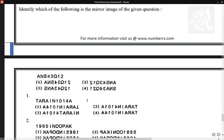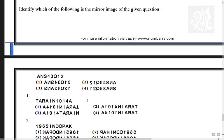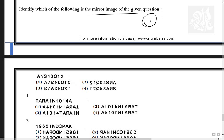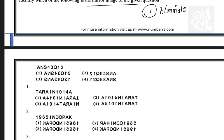Image questions — identify the mirror image of the given question. Visual reasoning: keep in mind, there are certain things you need to know. I believe in one rule of visual reasoning: we always eliminate, we do not find the answer. We eliminate what is not the answer, because in visual reasoning it's the only section where you will not have 'none of these.' You'll have all five diagrams — you eliminate.